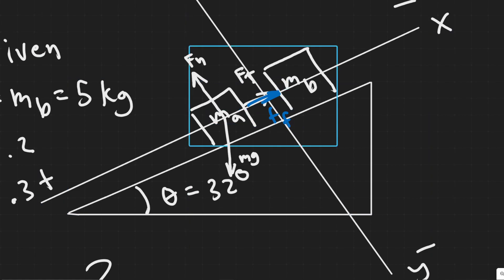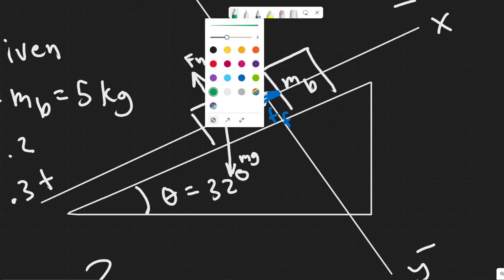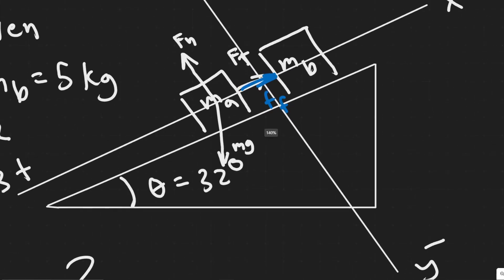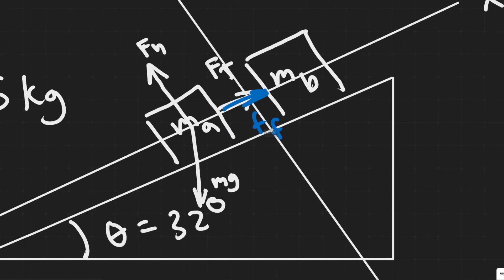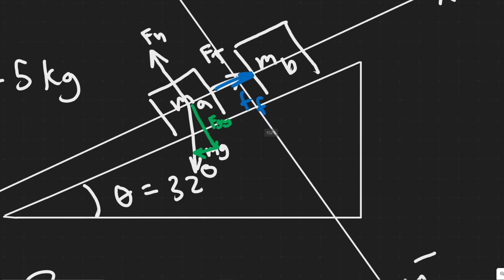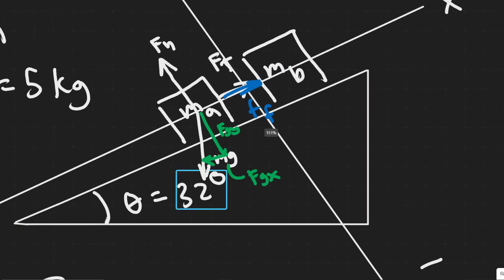The force of friction is always opposite to motion. Notice that F sub N, F sub T, and the force of friction are all acting along one of the axes — along the X or Y — but MG is in the middle. So we want to split MG into its X and Y components. This will be FG of Y, the Y component of gravity, and FG of X, the X component, along the x-axis.